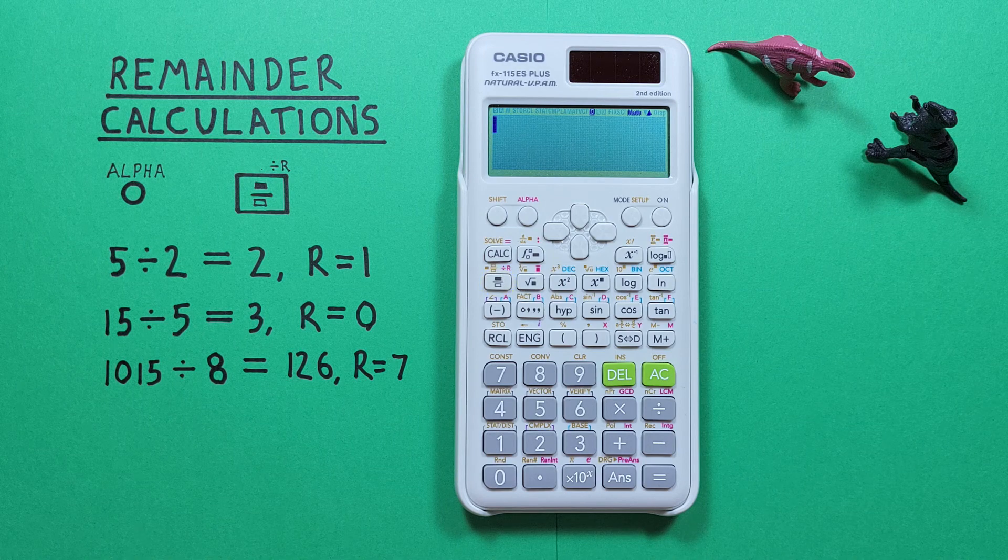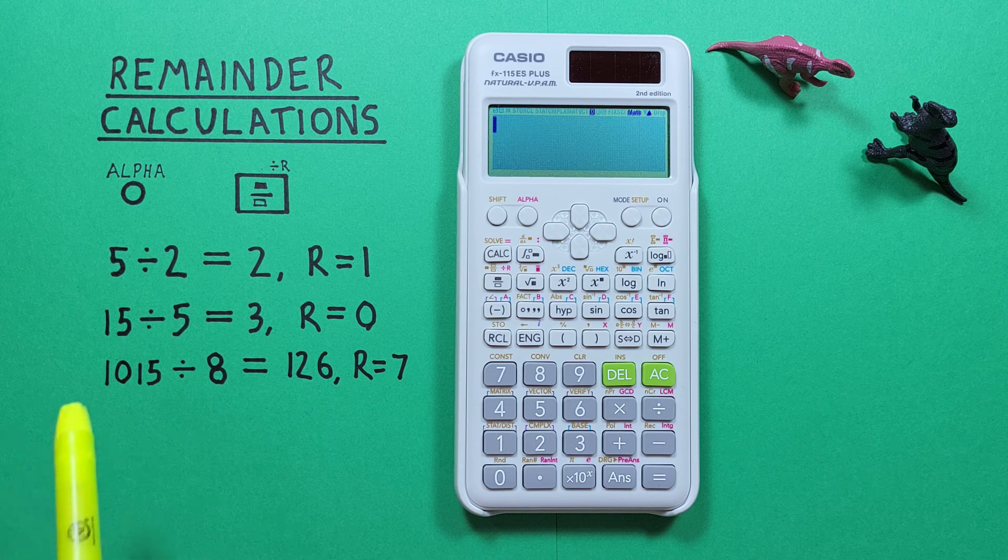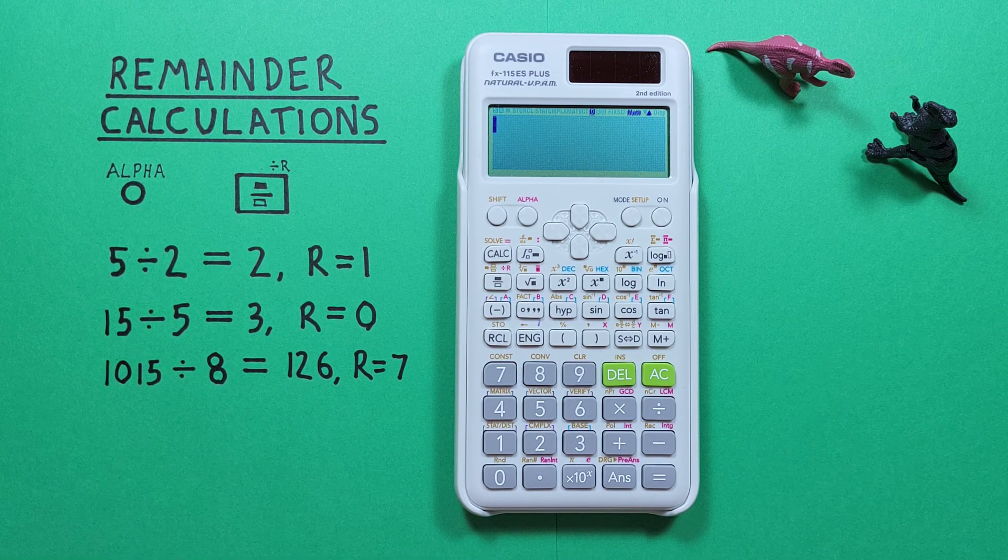If we want to divide two numbers and find the quotient and remainder, for example how many times 2 goes evenly into 5 and the remainder, we do it like this.